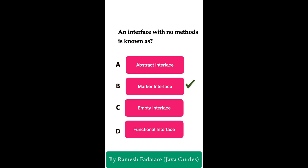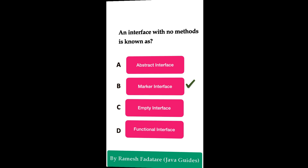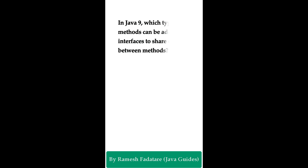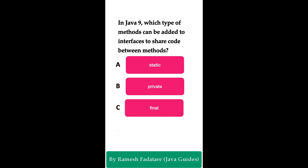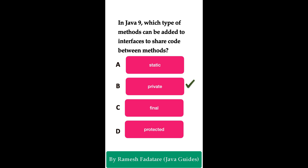Welcome to Java Quiz Series. Here is one more question: in Java 9, which type of methods can be added to interfaces to share code between methods? Option A: static methods. Option B: private methods. Option C: final methods. Option D: protected methods. You have five seconds to answer this question. The correct answer is Option B: private methods.